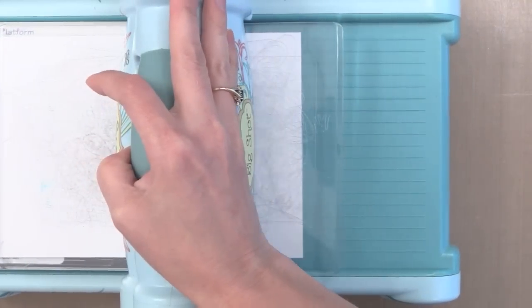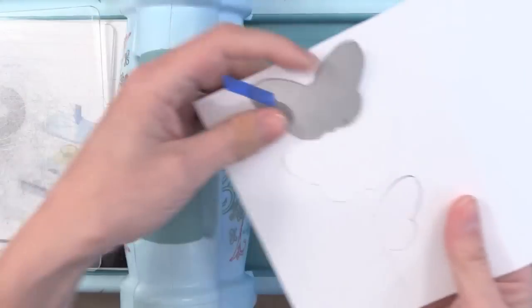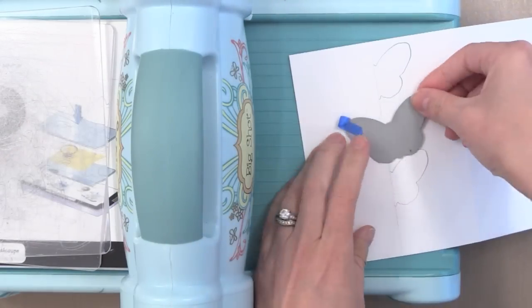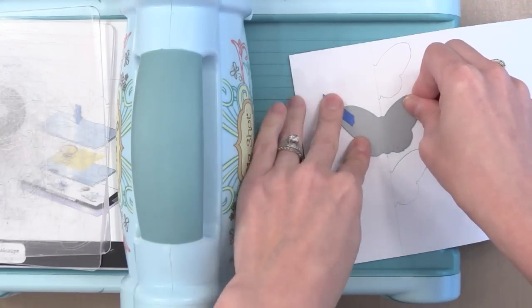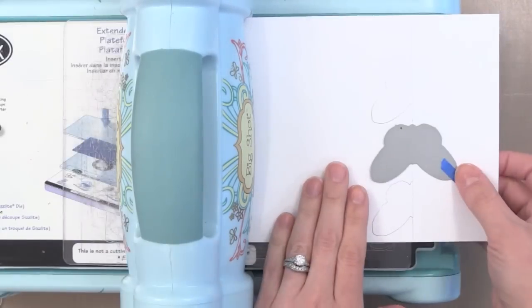This is a great way to get more out of your dies, especially with dies that have matching stamps, because we're going to go back and add some stamping in here in a little bit. You'll be able to see the butterflies come together. I'm going to do this a third time with the third die.